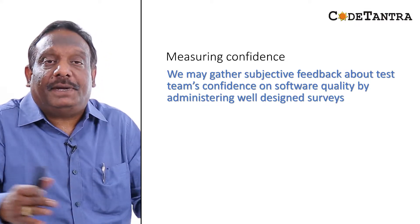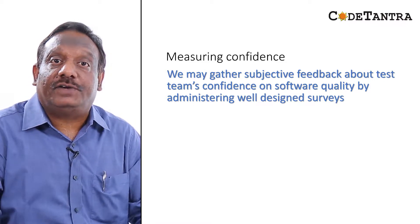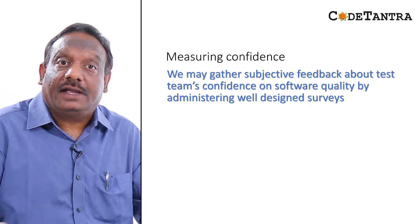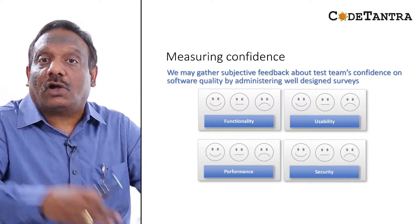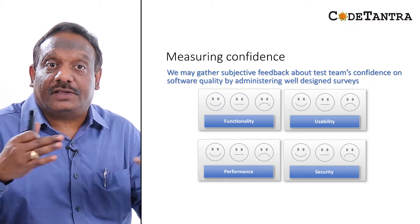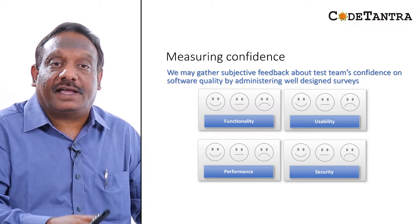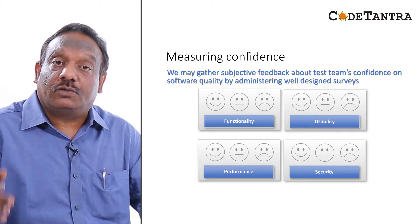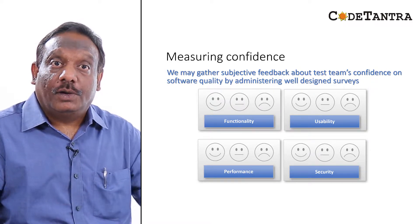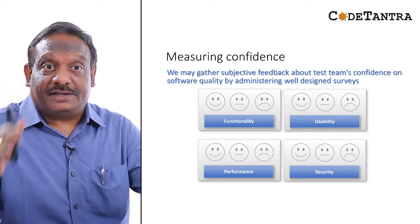For measuring confidence, there are no direct metrics, but we can use surveys and checklists. We gather subjective feedback about the test team's confidence in software quality by administering well-designed surveys. You can talk to end users, system testers, and other stakeholders, asking them to rate functionality, usability, performance, and security characteristics. This creates a confidence measure as part of our overall monitoring framework.